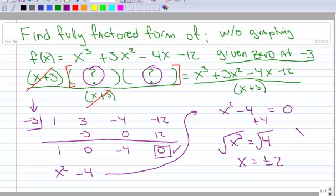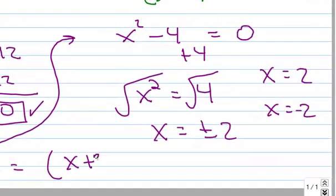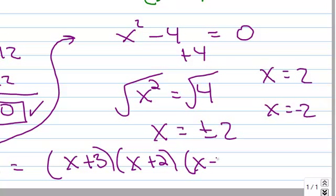That means I have a zero at 2 and another zero at negative 2. So now I can make my fully factored form. So I've got x plus 3, that was my original one. And I've got x plus 2. And I've got x minus 2.